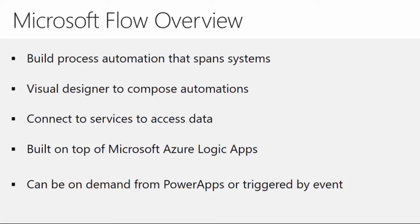From an overview standpoint, you're building processes that span multiple systems. Flow has its own visual designer that lets you build out these automations. You define the services you want to connect to — SharePoint, Dropbox, Twitter, or other methodologies — and then pick which services are going to handle those situations.